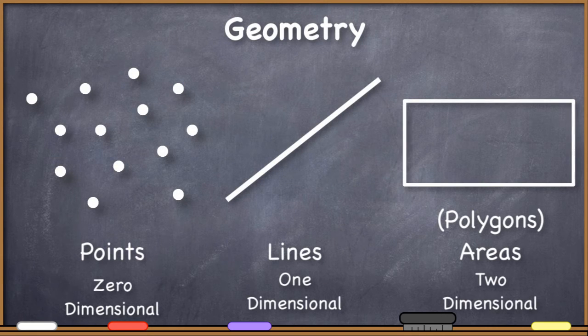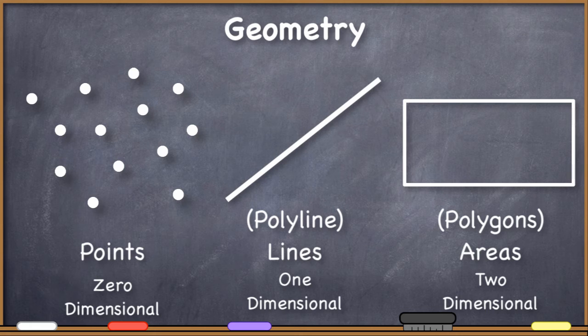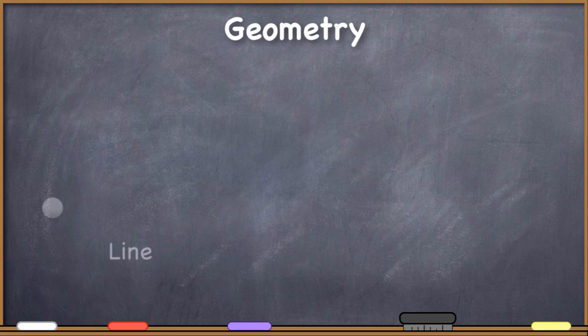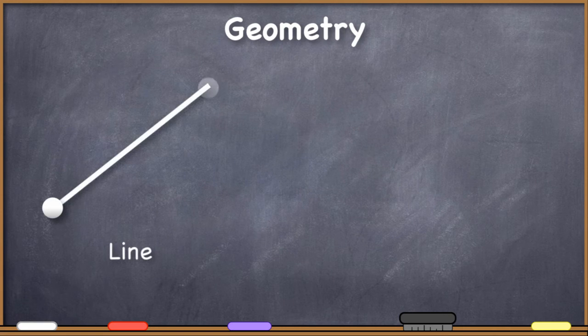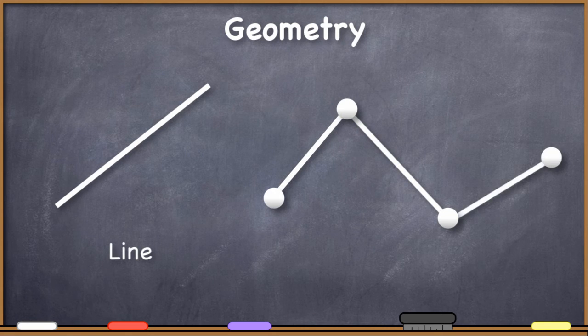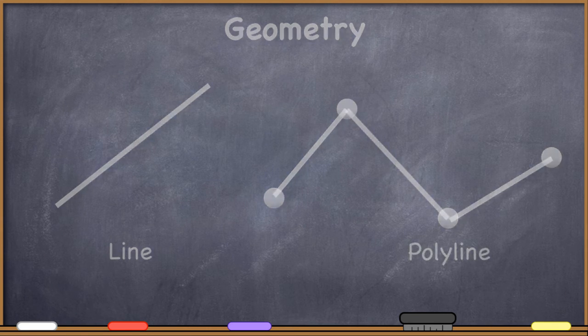Also, you may see this term polyline. Technically, the difference between lines and polylines are simply the number of segments that are used to make up the line. So a line that goes from one node, also called a vertex, to another vertex is technically a line. But if you have a single line made up of more than one segment that goes from vertex to vertex to vertex to vertex, then technically you're looking at a polyline.